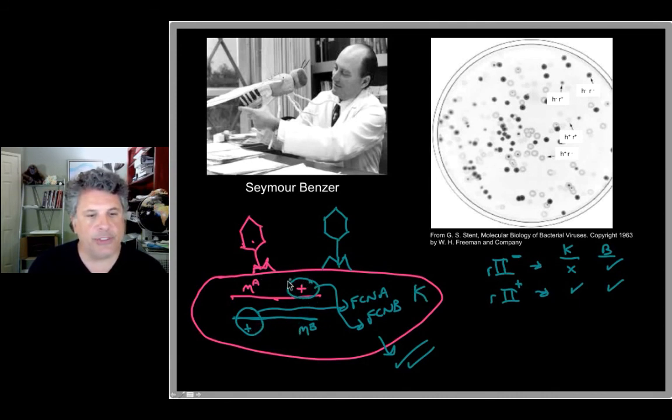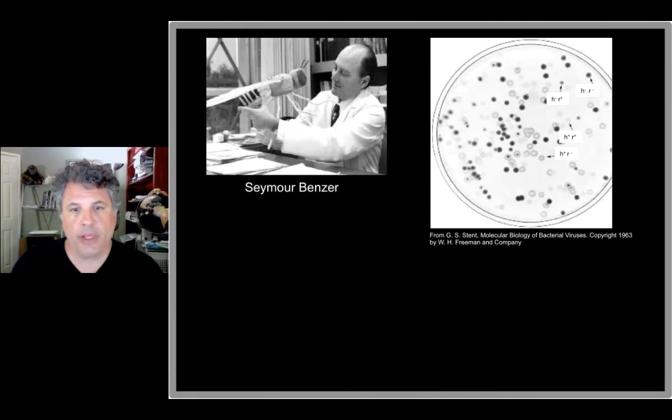What Benzer did was to characterize large numbers of R2 mutants that by themselves could not grow on strain K. He characterized their ability to provide functions that would allow other mutants in combination to grow. These co-infection experiments are key to Benzer's studies. Keep in mind the co-infection paradigm that I just laid out for you, and in the next lecture we'll consider the results of Seymour Benzer's studies on the R2 region of phage T4.